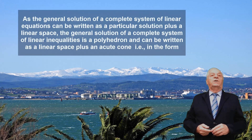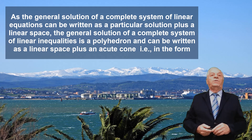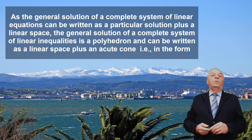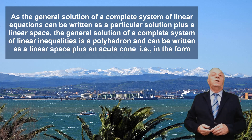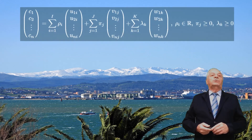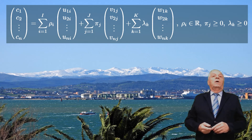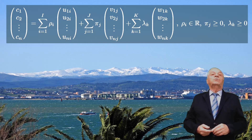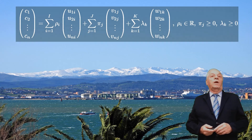As the general solution of a complete system of linear equations can be written as a particular solution plus a linear space, the general solution of a complete system of linear inequalities is a polyhedron and can be written as a linear space plus an acute cone — where a cone C is said to be acute if no vector s in C satisfies minus s also in C — plus a polytope. Sets of vectors u, v, and w exist such that the general solution can be written as indicated, where the linear space is generated by vectors ui for i=1 to N, the cone by vj for j=1 to J, and the polytope by wk for k=1 to K.